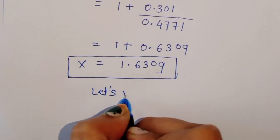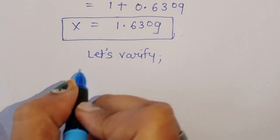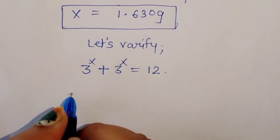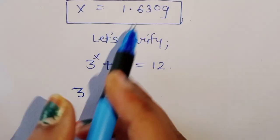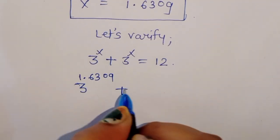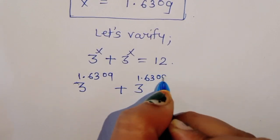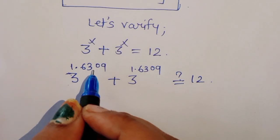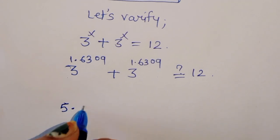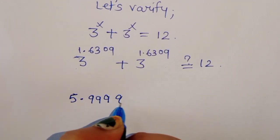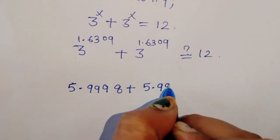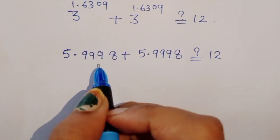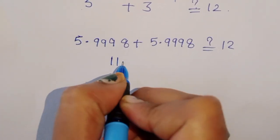Let's verify our value. Is it correct? We substitute back: 3 power 1.6309 plus 3 power 1.6309 should equal 12. When we calculate 3 power 1.6309, it comes to approximately 5.9998. Adding the same value again gives approximately 11.9996.